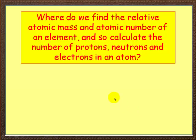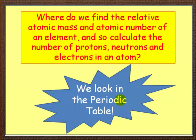A lot of information so far. So where do we find relative atomic mass, atomic number of an element, and use them to calculate protons, neutrons, and electrons? Where should we look? The periodic table — I'll be looking at this in another video.